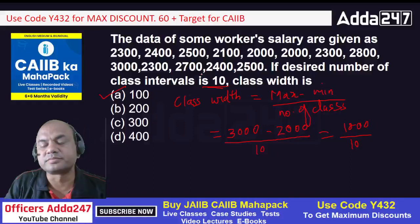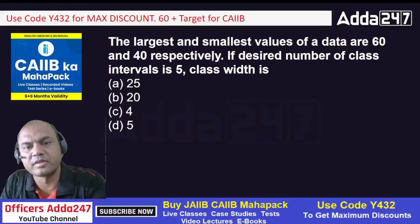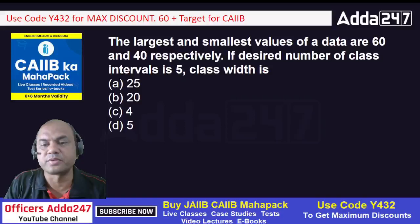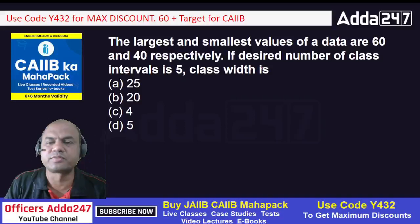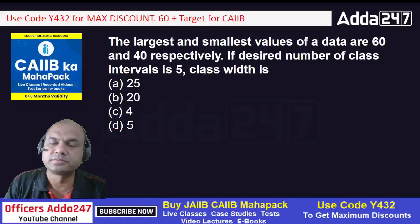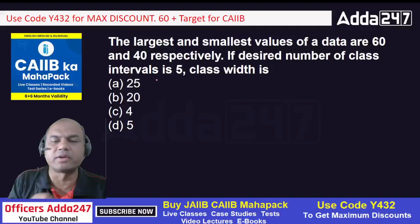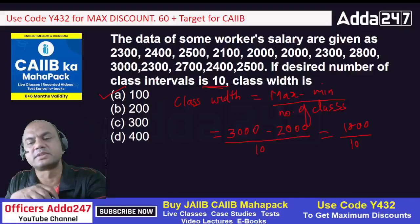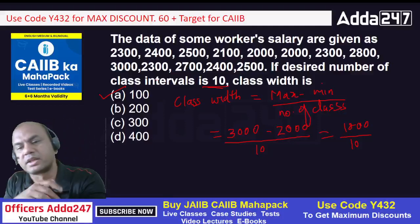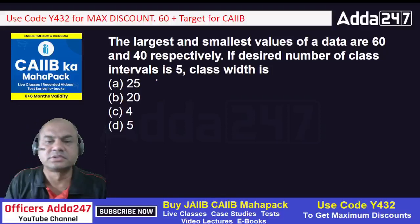Next question: the largest and smallest values of the data are 60 and 40 respectively. If the desired number of class intervals is 5, then what is the class width? This should be easy — just now we covered the formula: class width equals maximum minus minimum divided by number of classes.